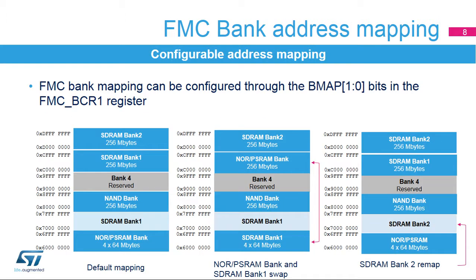The mapping of the FMC bank addresses can be modified using the BMAP 1-0 bits in the FMC BCR1 register. Three different mappings can be configured: the default mapping, a second mapping enabling the swap of the NOR PSRAM bank with the SDRAM Bank 1, and a third one remapping the SDRAM Bank 2, thus allowing access to the same SDRAM bank at two different address ranges.